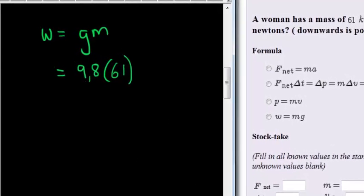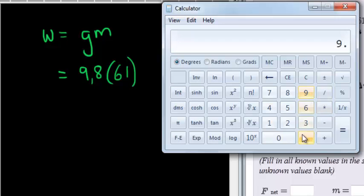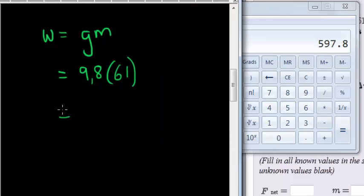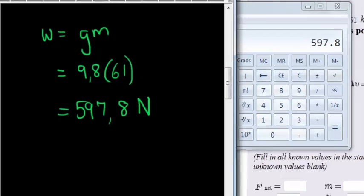So we use our calculator to solve that. 9.8 times 61 gives me 597.8. 597.8 Newtons. That is her weight if her mass is 61 kilograms.